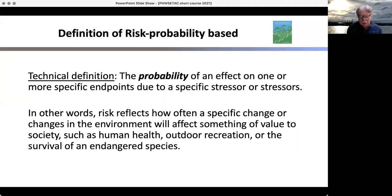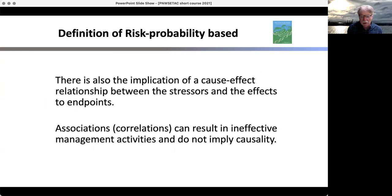This is a definition from a book the National Academy put out. They define risk as the probability of an effect on one or more specific endpoints due to a specific stressor or stressors. So this definition is very probabilistically oriented. There's also implication of cause and effect, not simply association. That's really important. Association does not mean causality and we need to be really careful with that. Just using associations can result in ineffective management because you don't understand the causality.